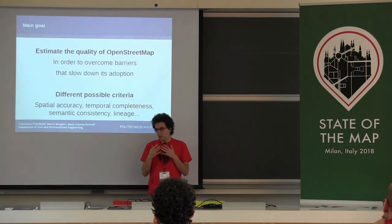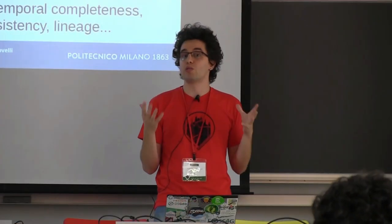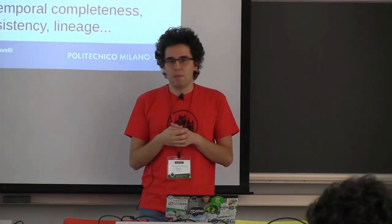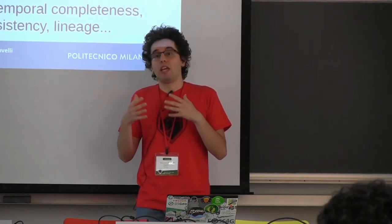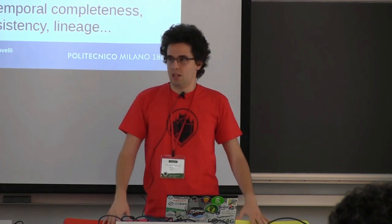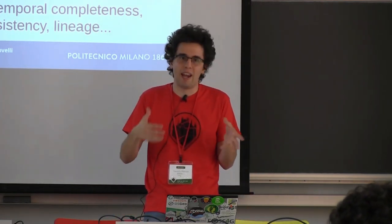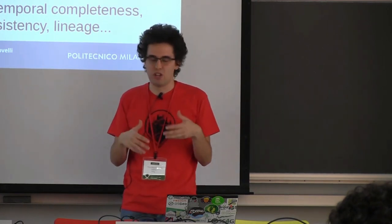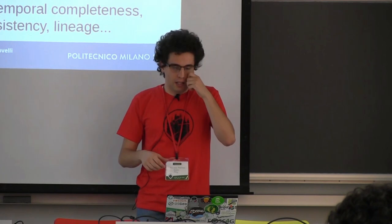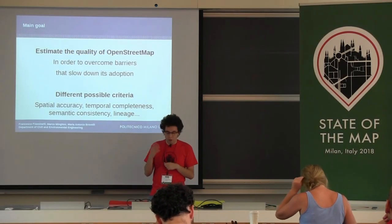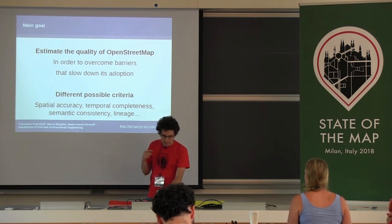What I would like to do is try to estimate the quality of OpenStreetMap, because this is one of the main issues why people are not able to use OpenStreetMap in their work. You need to know the errors and have an idea about accuracy and precision in order to use your data. There are many different criteria you can use: spatial accuracy, temporal completeness, consistency from a semantic point of view, lineage.